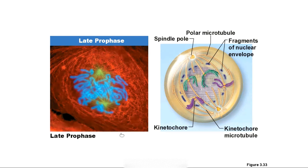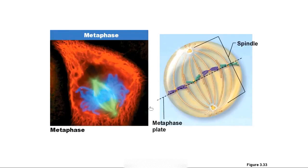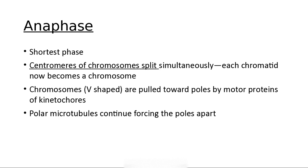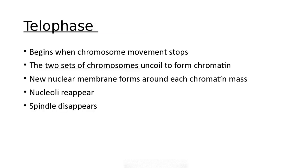In late prophase, spindle fibers attach to the chromatids. In metaphase — 'meta' for middle — all the chromatids are lined up right in the middle of the cell. The spindle fibers then shorten, ripping the chromatids apart. In anaphase, the chromatids are pulled apart and head toward opposite ends of the cell, because the goal is to make two different cells.